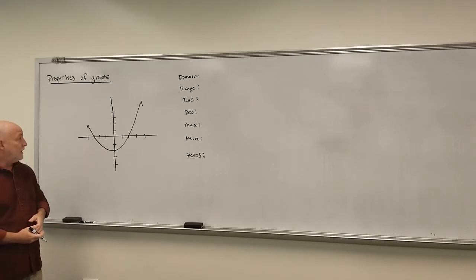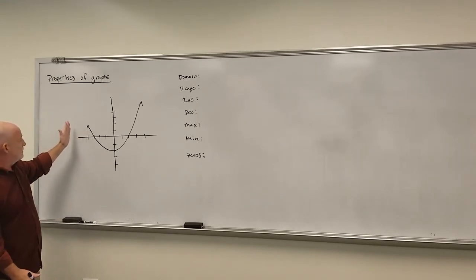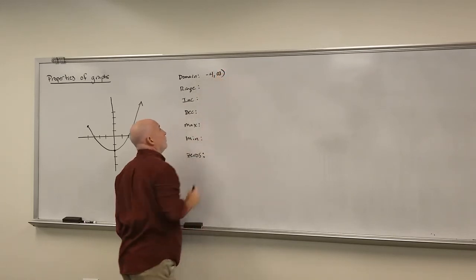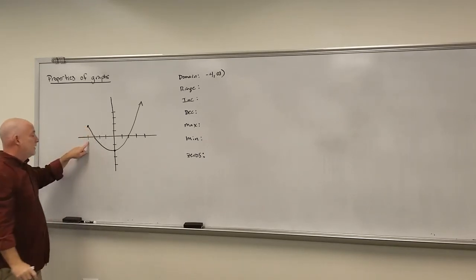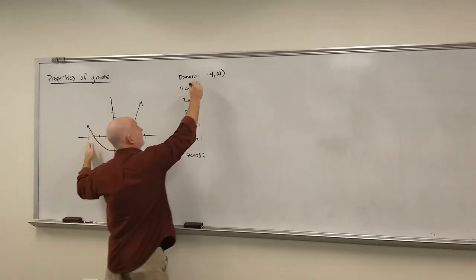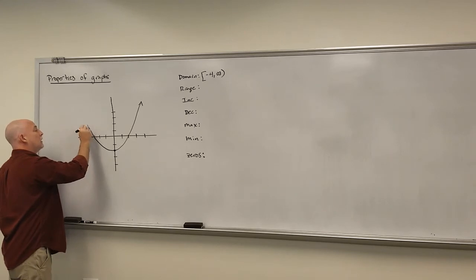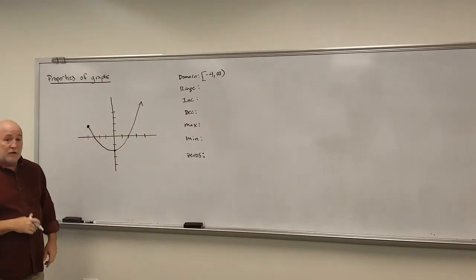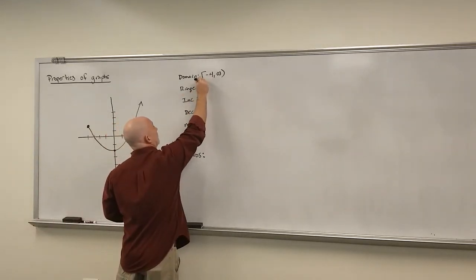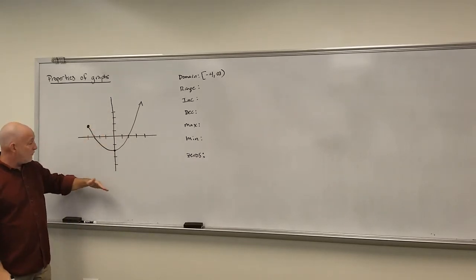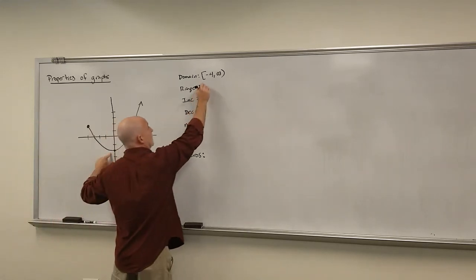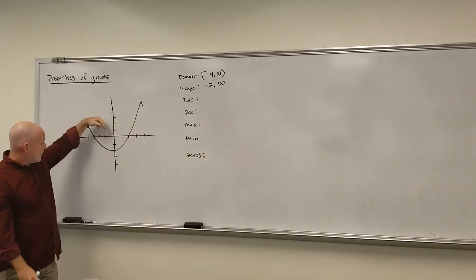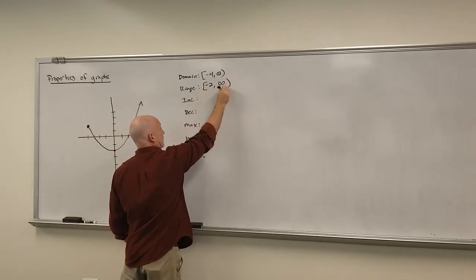Domain: the x-values the graph covers. Notice it doesn't have any x-values to the left — it kind of starts here at x = −4 and goes on forever. So domain is [−4, ∞). Since this is a closed circle at x = −4, the graph actually exists there, so we use a square bracket. If it had been an open circle, we'd use parentheses. For range — y-values — the smallest y-value is −2 and the graph goes up forever, so range is [−2, ∞). We include −2 because the graph actually touches it.